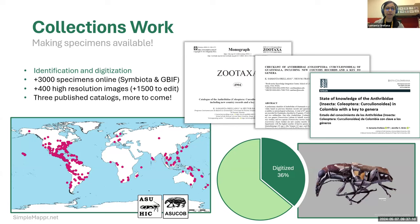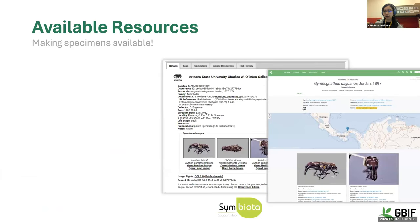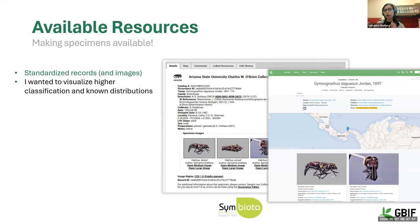All of this material has been condensed into three published catalogs, with more to come. We have all this information now available online — all the records, the georeferenced points, the images, and some of the catalogs. What's really important to me right now, besides having all this information online and making the specimens available with standardized records and images, is to visualize the higher classification and the known distributions.